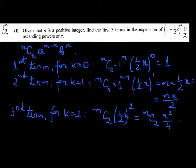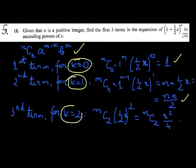Okay, so after writing the general term, for k equals 0, we find the first term, which is that one. For k equals 1, we find the second term, which is nx over 2. For k equals 2, we find the third term, which is n combination 2, x squared over 4.